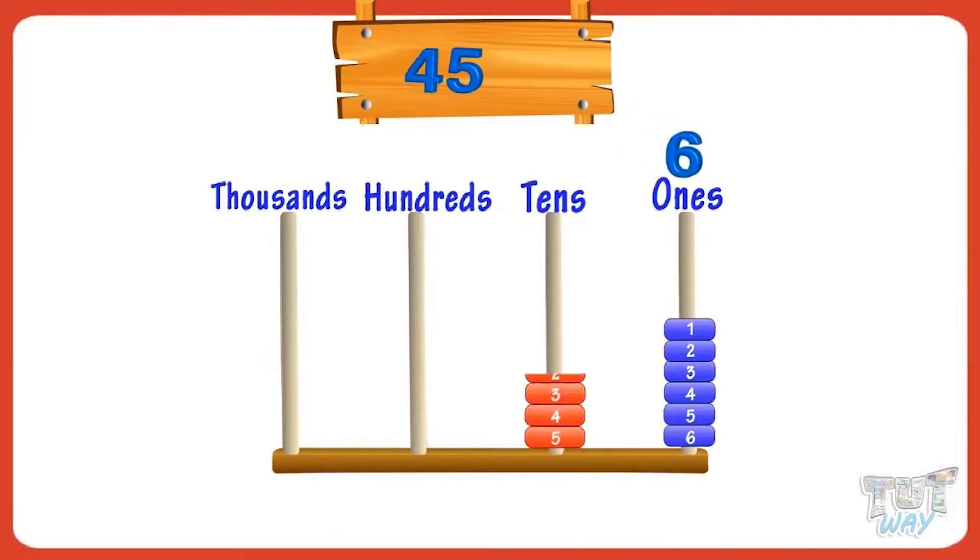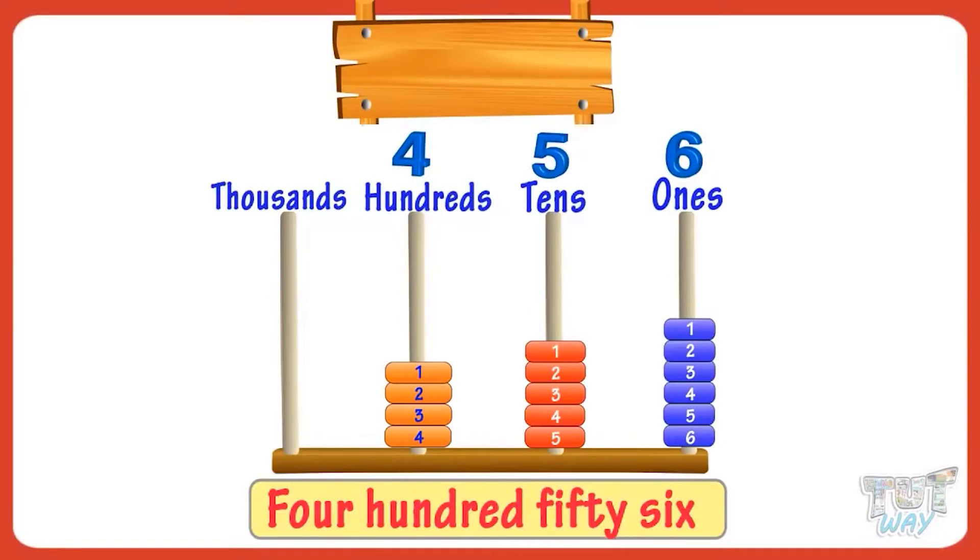Five tens are there in the number, and four hundreds are there in the number. Now, we can name this number as four hundred and fifty-six. Good!